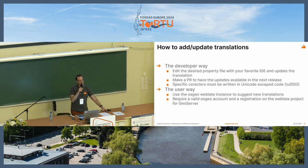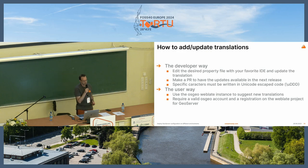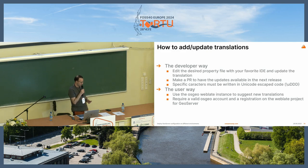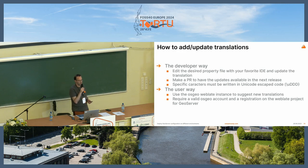You can update the translation the developer way by editing it in your IDE and submitting a PR to update the next release. You can also use the OSGEO WebLate instance to suggest new translations. You need an OSGEO account and then you have to ask to be registered in the project.